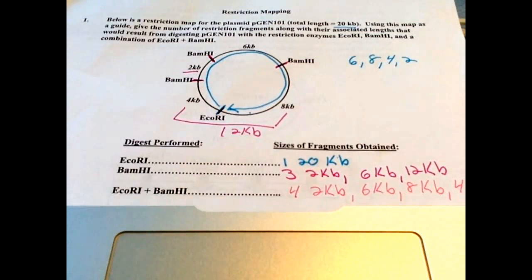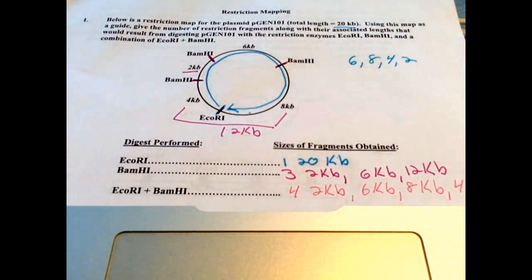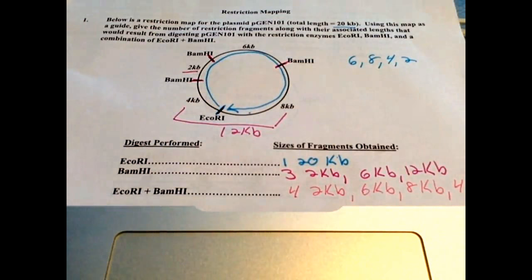So looking at this first plasmid, they're showing you what a double digest would look like using two different endonucleases or restriction enzymes. One is ECOR1, and ECO tells you it comes from E. coli, and R is the particular strain of E. coli, and 1 means it was the first enzyme discovered.